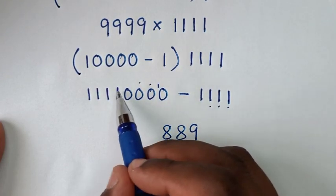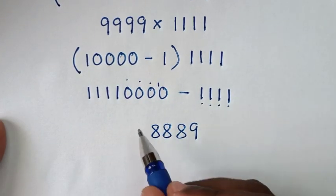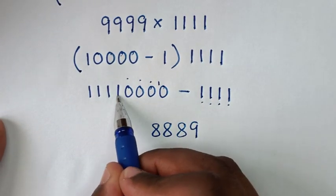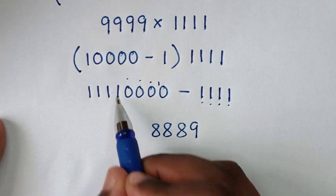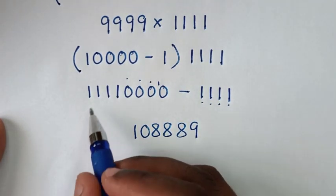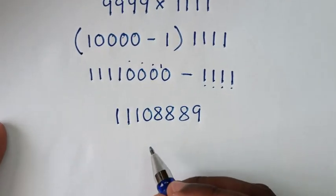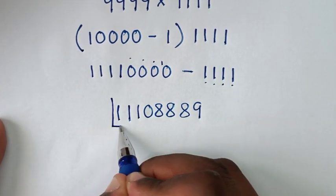Then from here we already borrowed, so it will be 0, then 1, then 1, 1, giving us 1108889. Therefore this is our final answer.